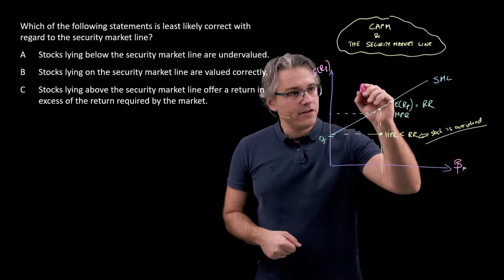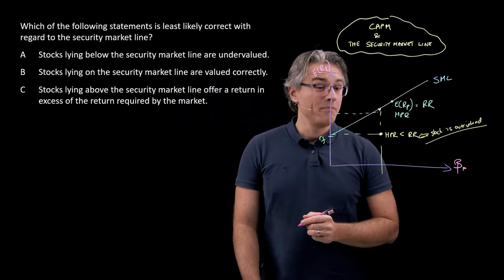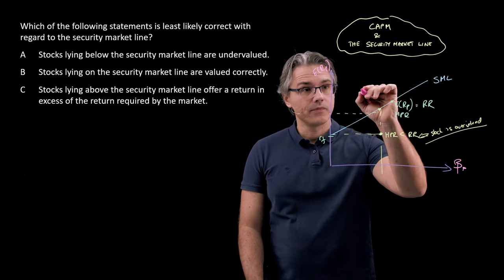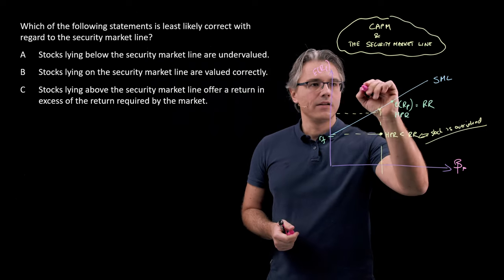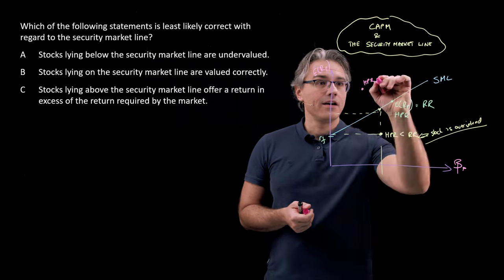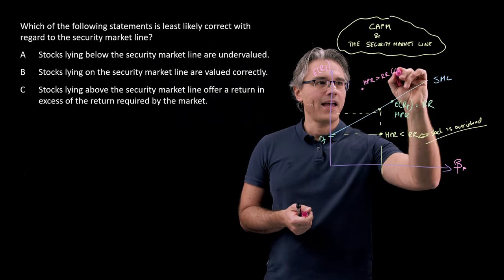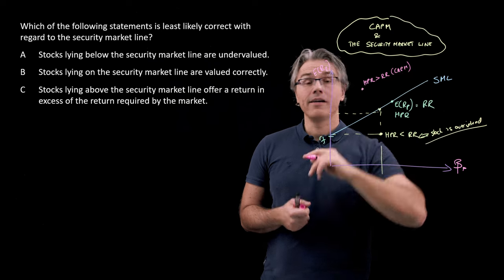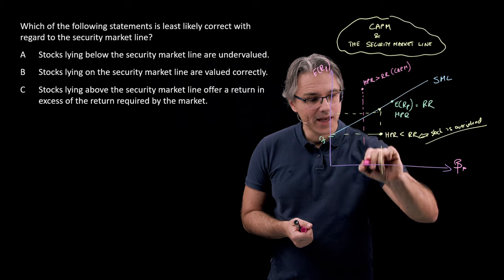Now, the reverse is true for the securities that lie above the SML. So, let's say over here, we're going to have a stock. And for this one, its holding period return or the return which we expect from it is actually higher than the rate of return required under the CAPM model. So, this RR is the one predicted or dictated by the CAPM model.